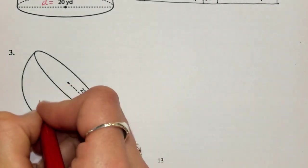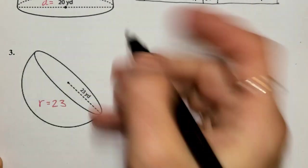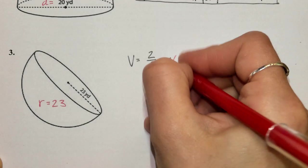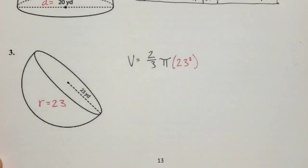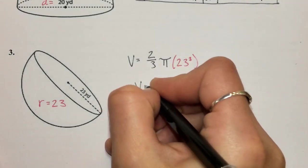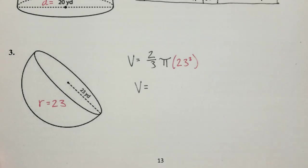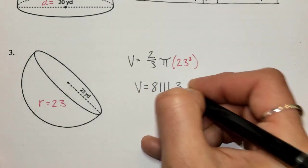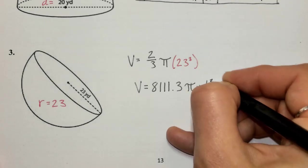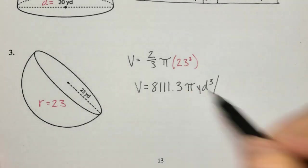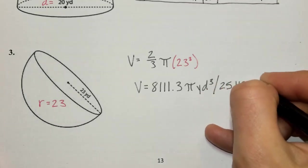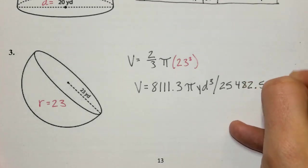Last one — they give us the radius of 23 flat out. So volume equals two-thirds pi times 23 to the third. Pause and type it in yourself on either calculator. In terms of pi, without typing the pi symbol, we get 8,111.3π yards cubed. Don't forget the pi symbol. Once we plug pi in, we get 25,482.5 yards cubed.